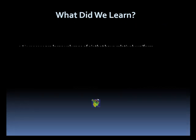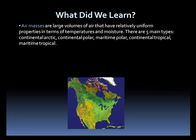Air masses are large volumes of air that have relatively uniform properties of temperature and moisture. There are five main types: Continental Arctic, Continental Polar, Maritime Polar, Continental Tropical, and Maritime Tropical.